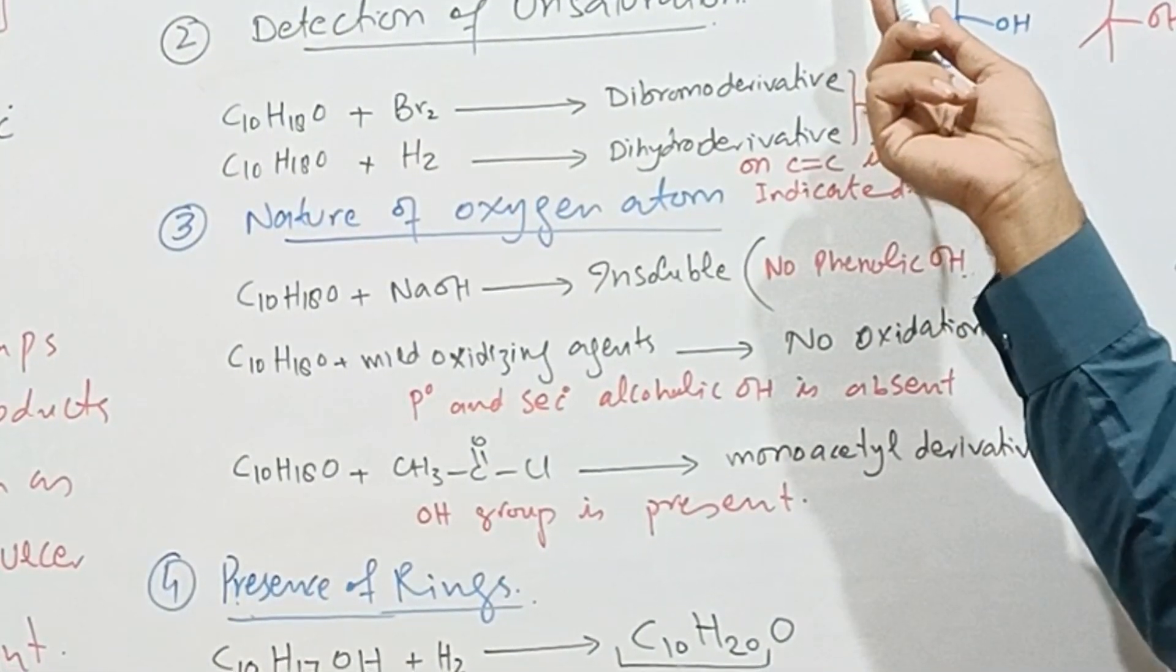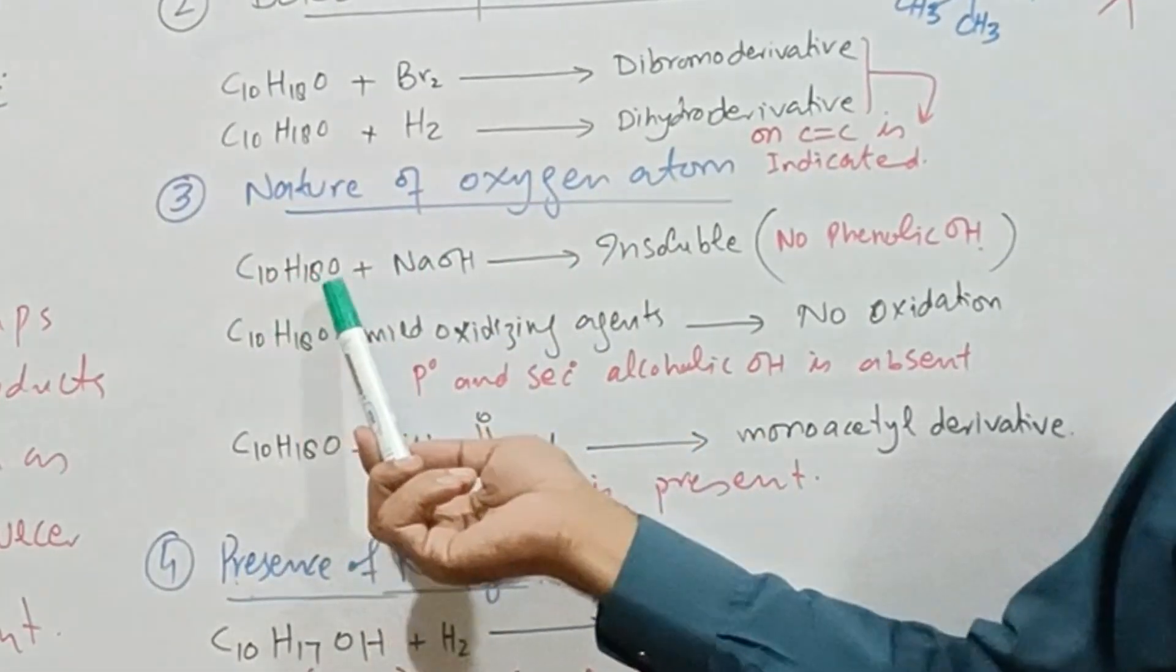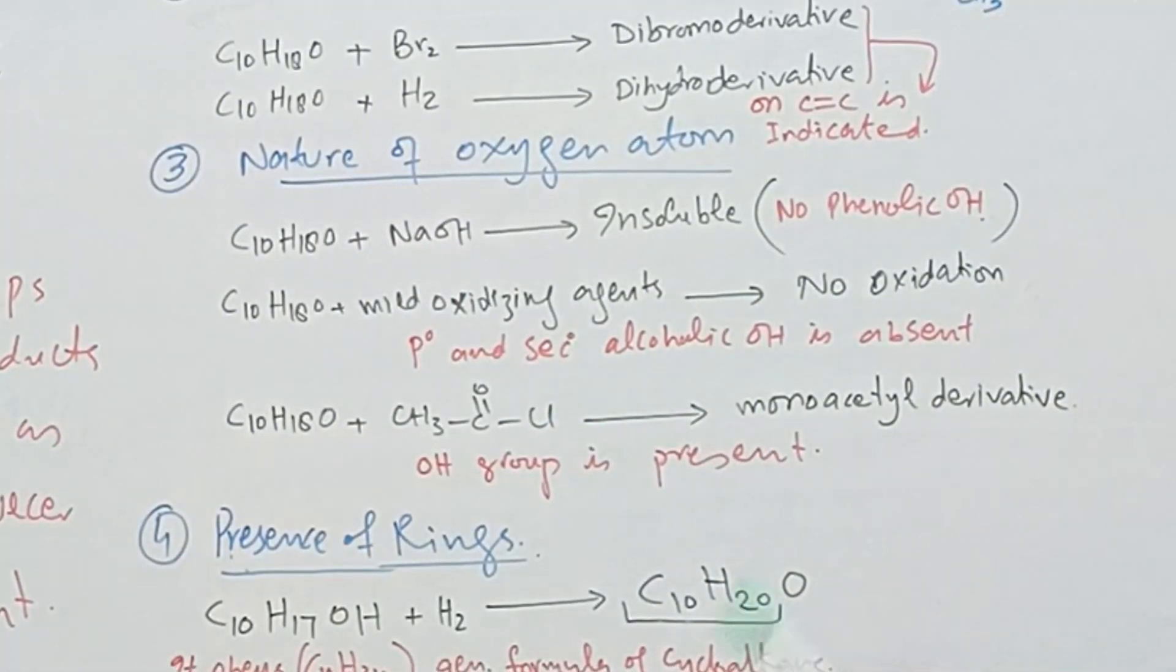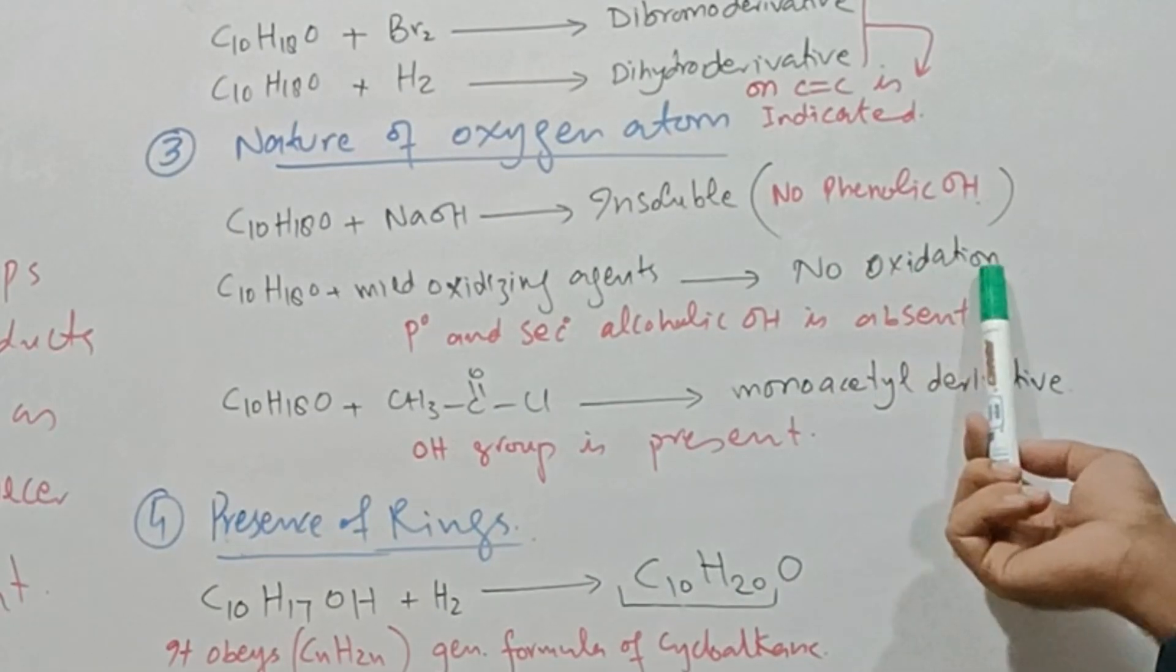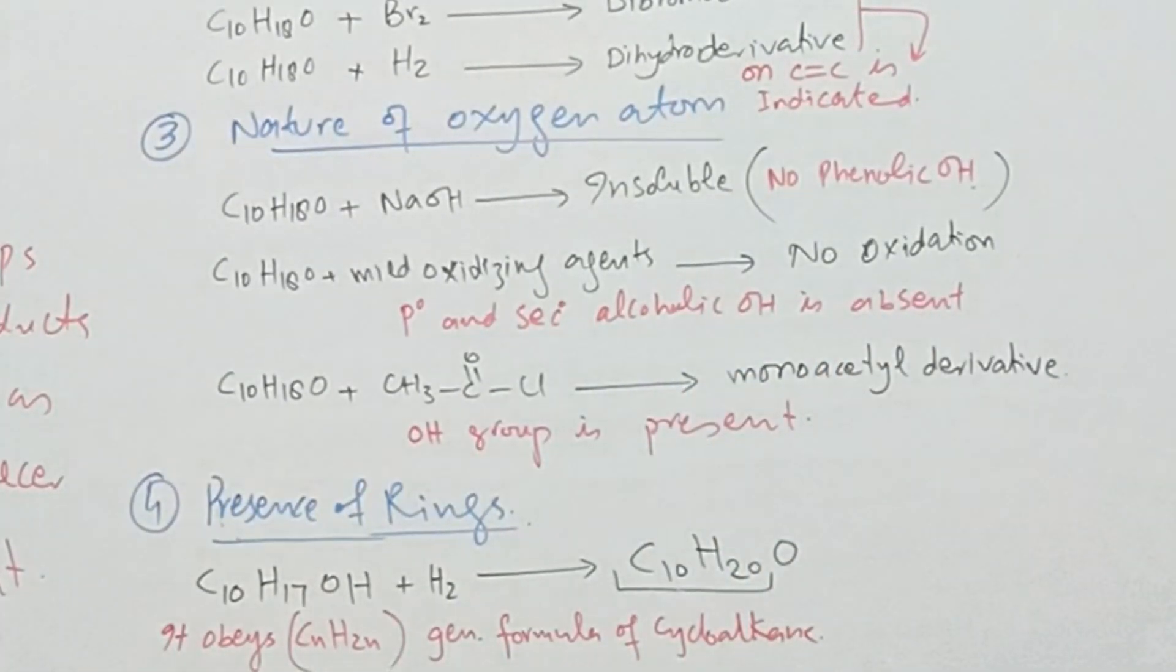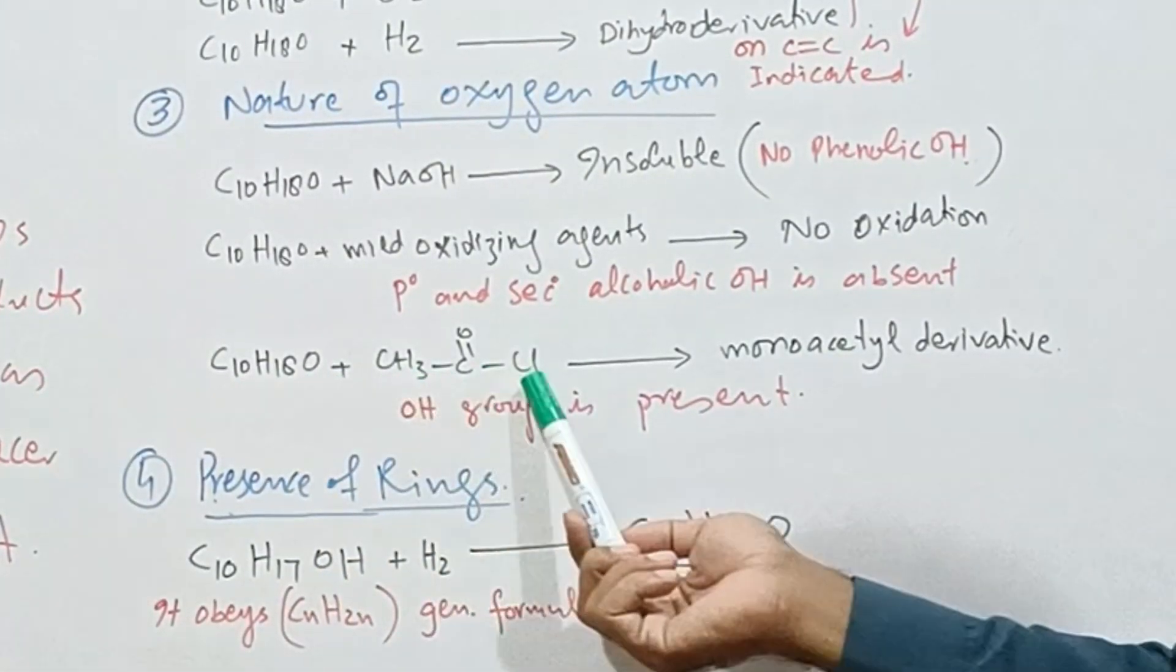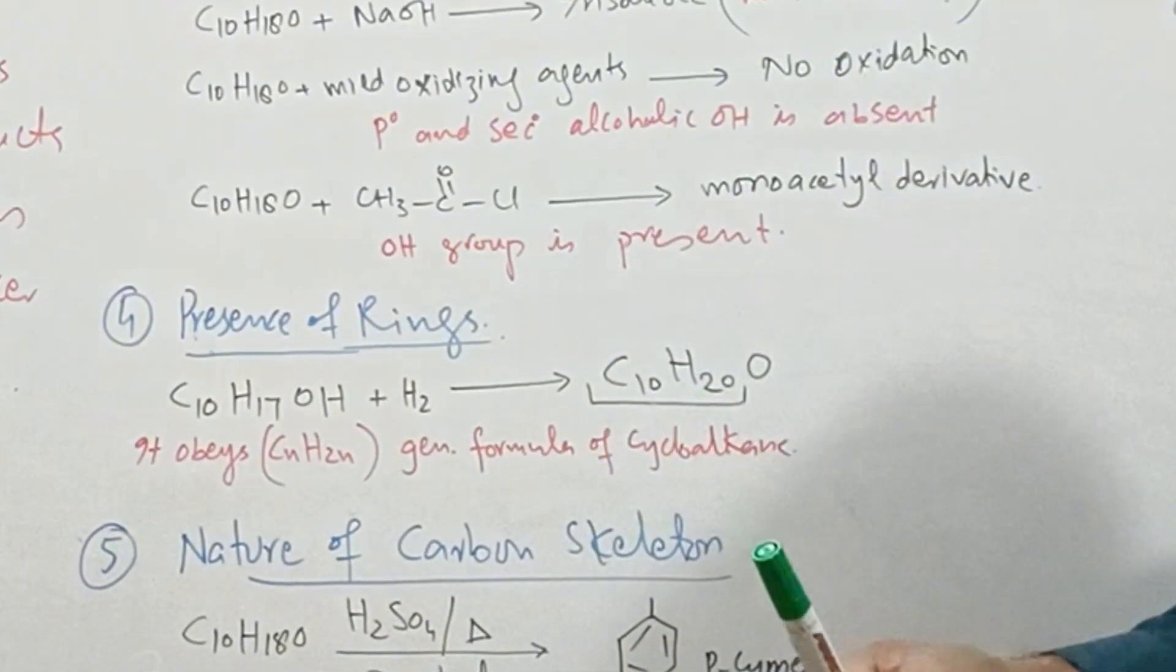The molecular formula shows oxygen is present. To detect the nature of the oxygen atom: when alpha-terpineol is mixed with sodium hydroxide solution, it is insoluble, showing no phenolic hydroxyl group is present. With mild oxidizing agent, it does not undergo oxidation, showing primary and secondary alcoholic groups are absent. When treated with acetyl chloride, monoacetyl derivative is formed, showing one hydroxyl group is present.